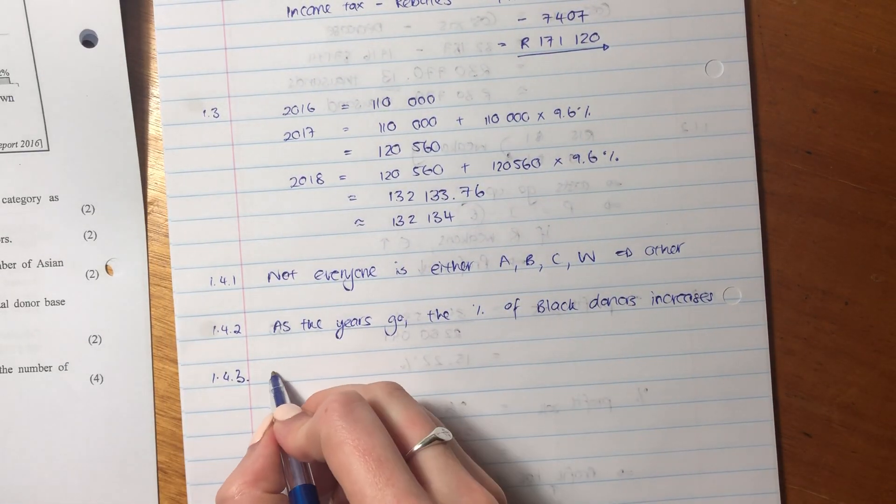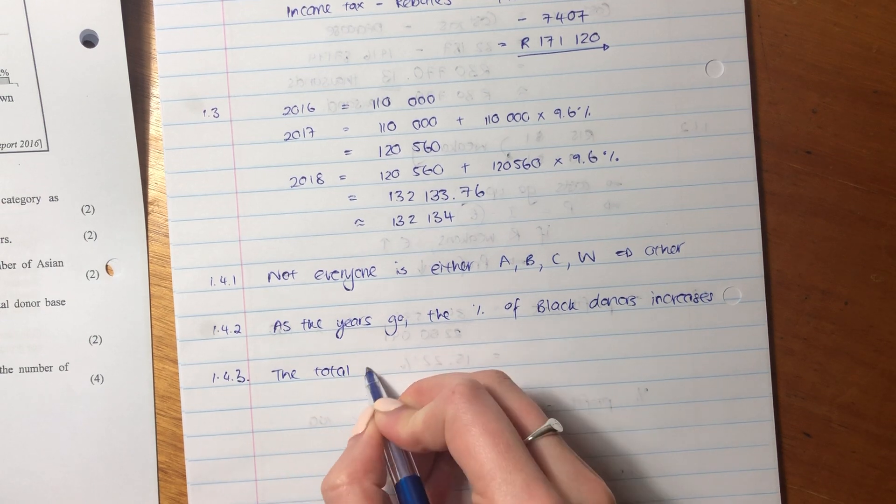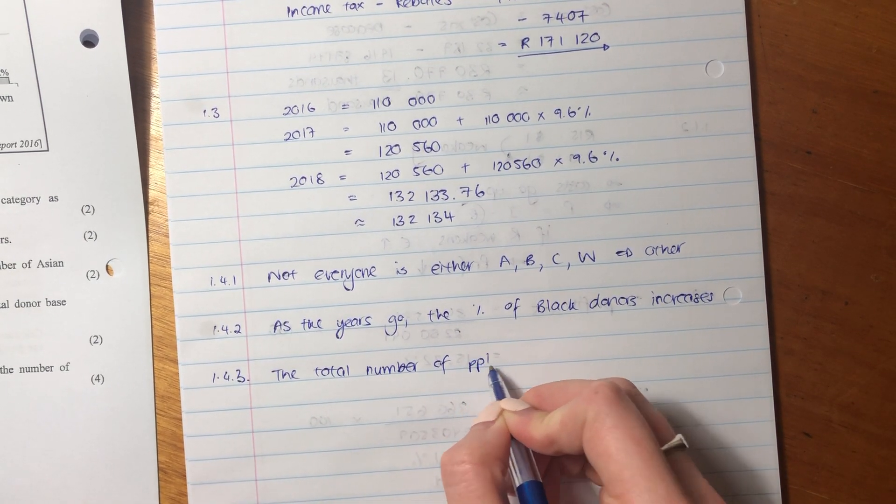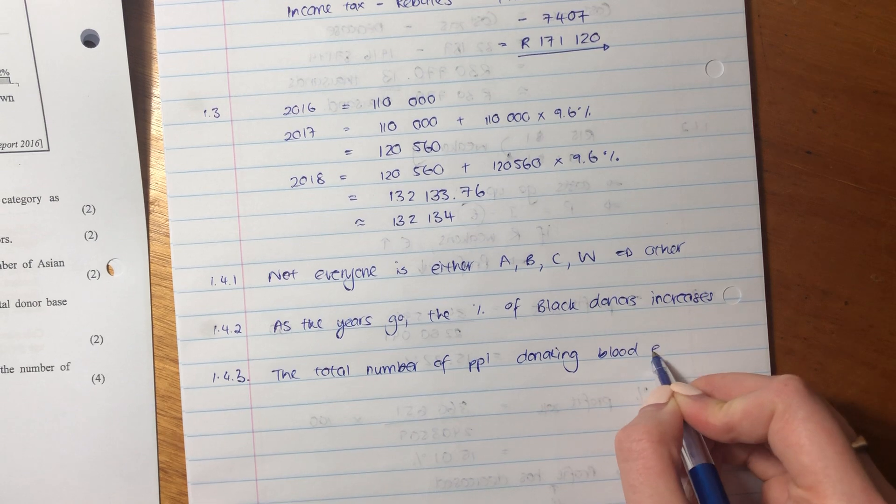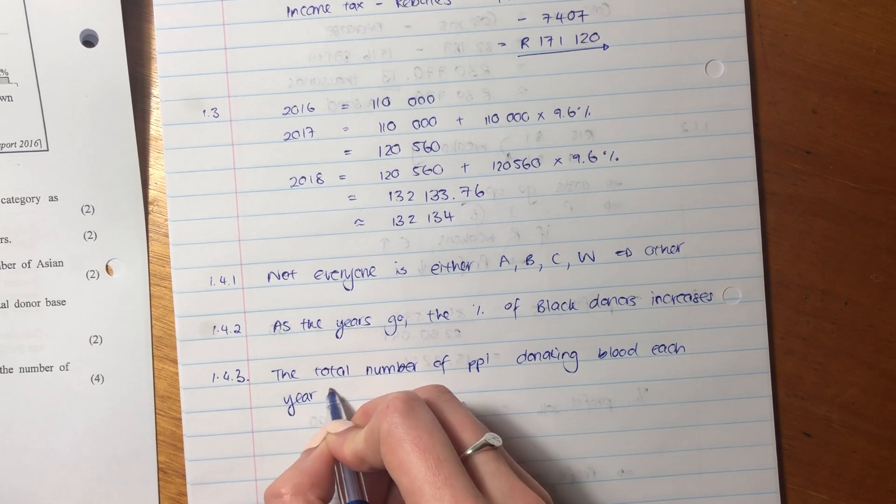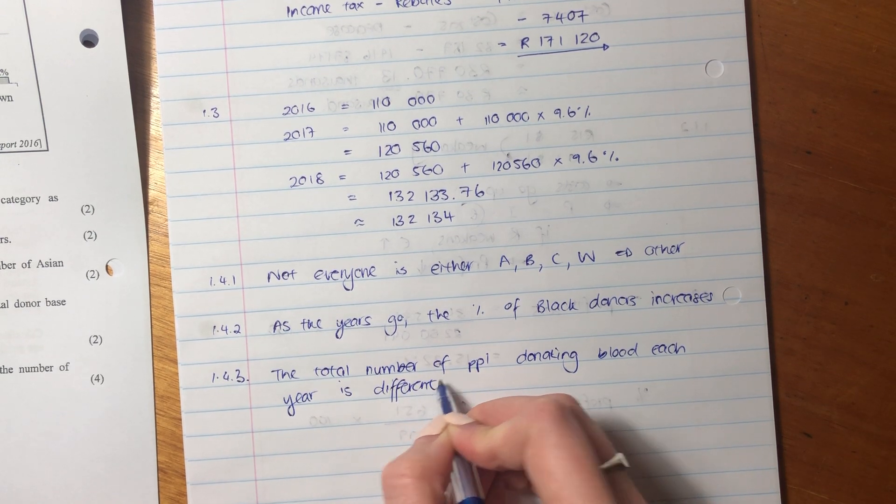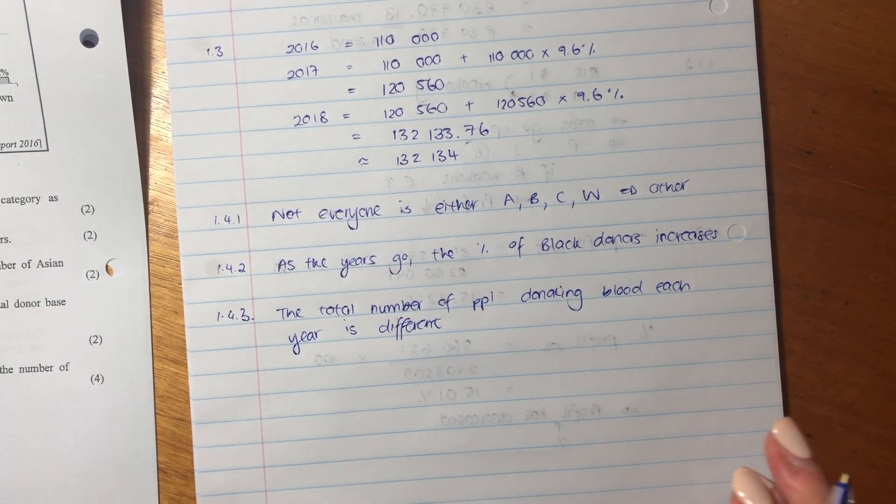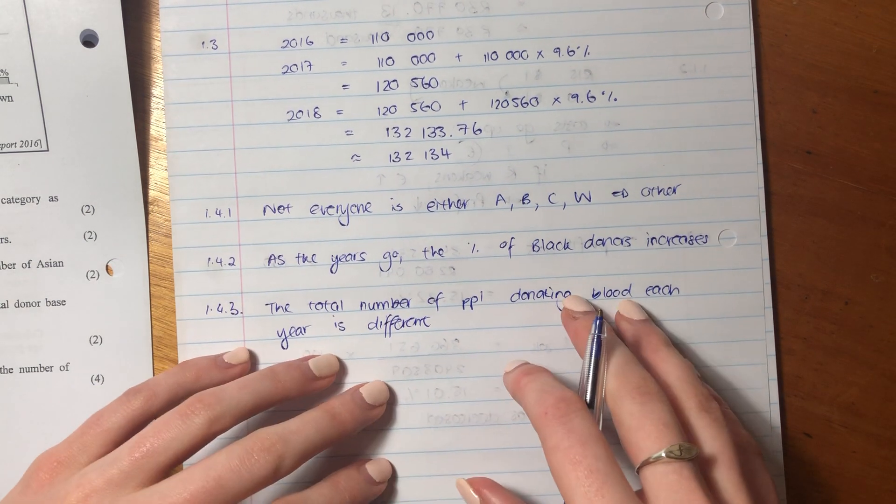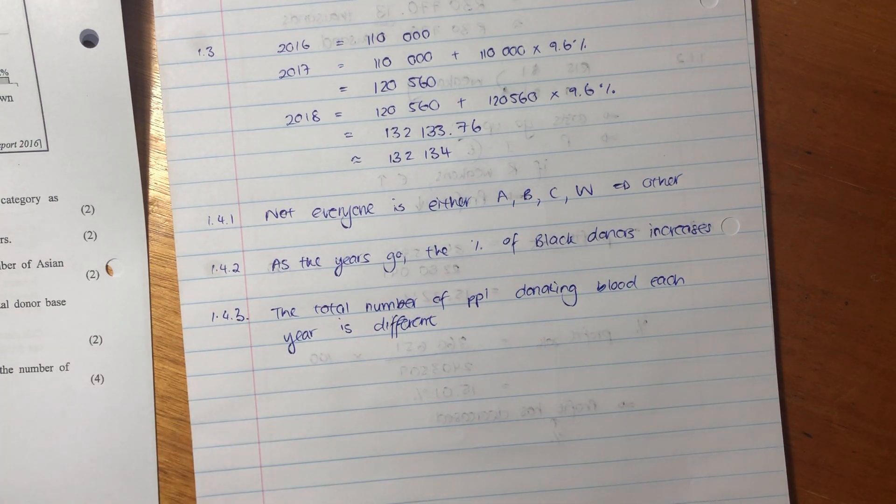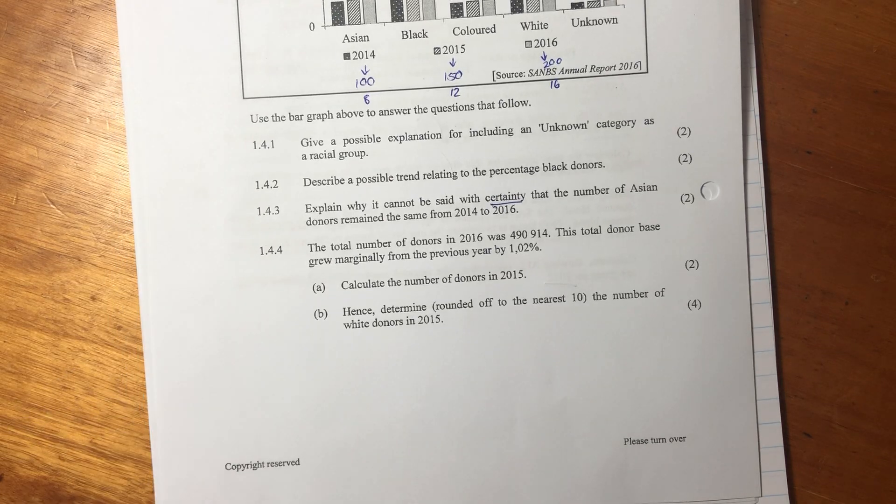So we're going to say here the total number of people donating blood each year is different. That's the most obvious one. You could also say the percentages could be rounded off, because all of these are rounded off with no decimal places. But one could be like 7.9 and the other one could be 8.1, and they could both be rounded off to 8. So there's lots of different reasons you can give there. But this one to me is the most thorough, the most insightful.